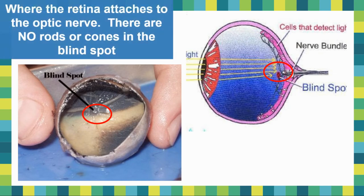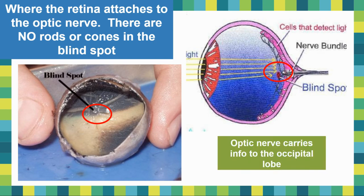The blind spot is essentially where the retina attaches to the optic nerve. It's what actually makes the human eye less than perfect — some animals don't even have blind spots. There are no rods and no cones in the blind spot. The optic nerve's job is to carry the impulse and information to your occipital lobe, which is responsible for vision. Your eye is the sensory receptor, your optic nerve is the sensory neuron carrying it to your brain, and your brain interprets it.